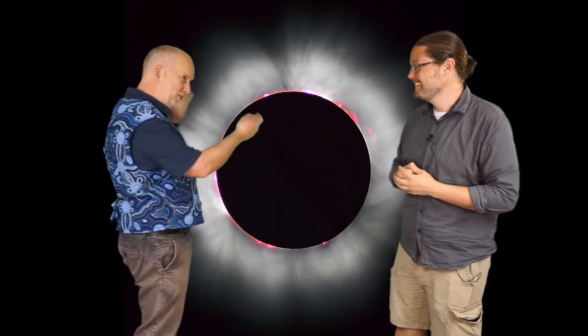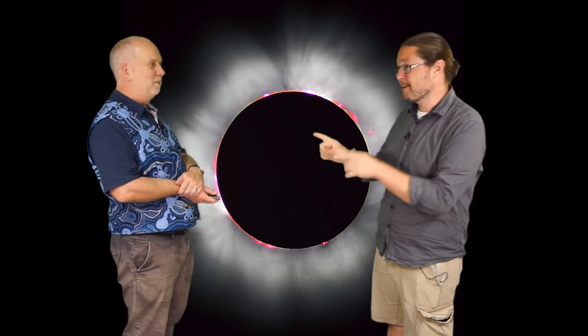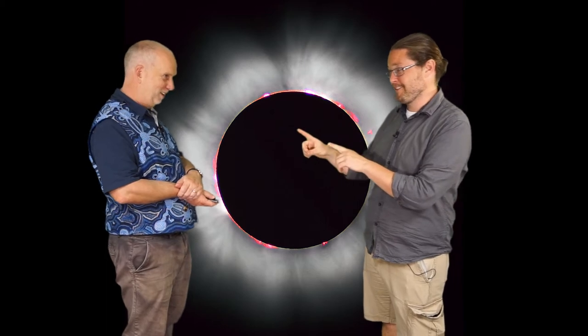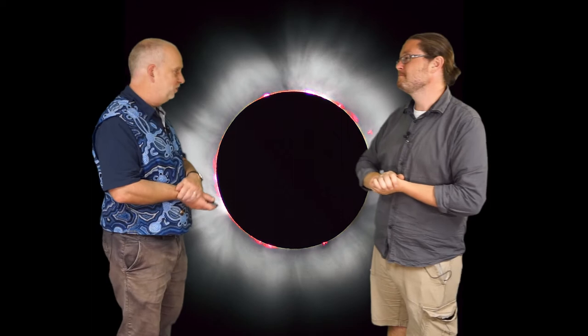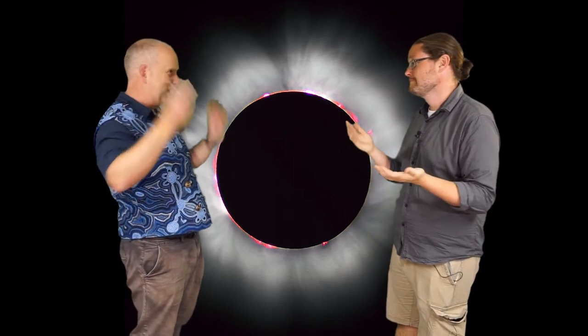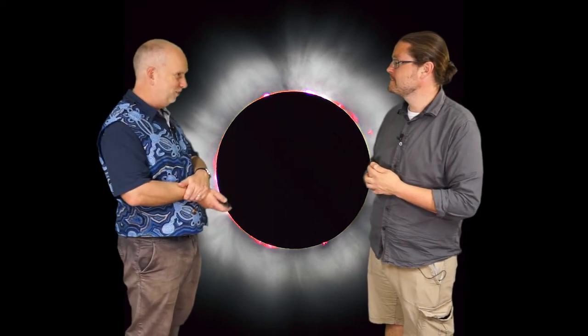But then the outer bit, this white fluffy bit that sends out, that is called the corona. Not corona, the beer either. No, so it's just, of course, the Latin word for crown. So it was seen like, I don't know who has a glowing crown like this, probably some evil person in a fantasy novel. Anyway, it was named after the crown that surrounds the sun.